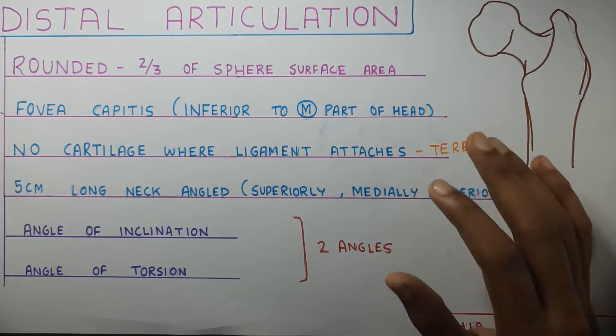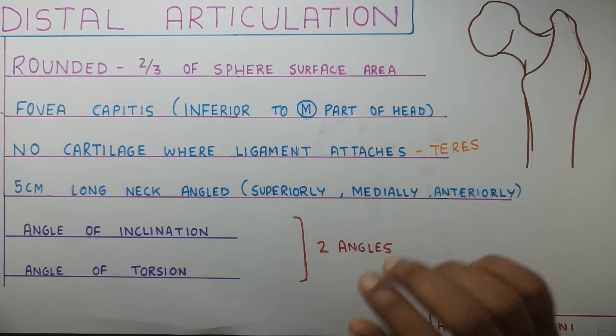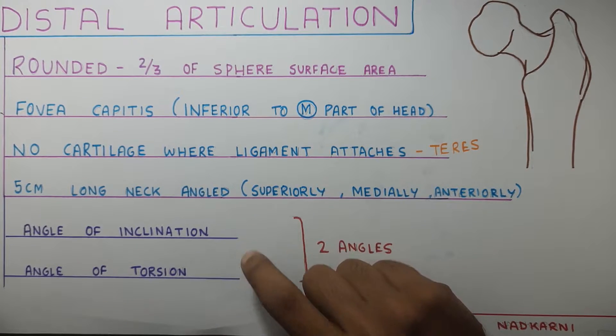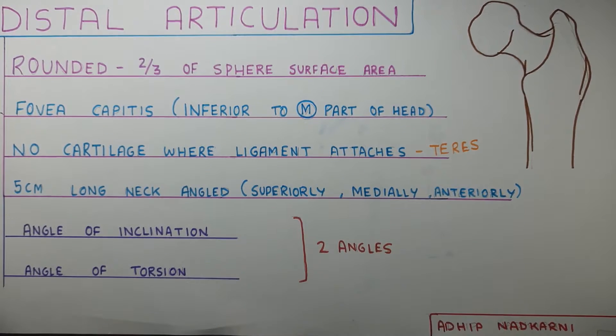Now let's look at the angles. There are two angles: the angle of inclination and the angle of torsion.